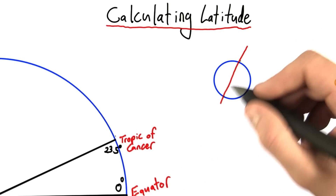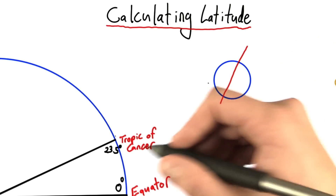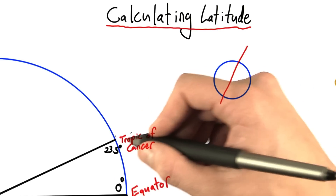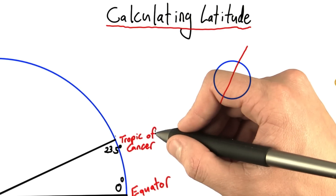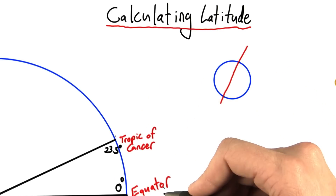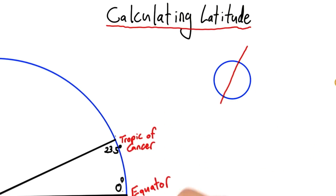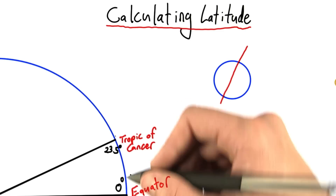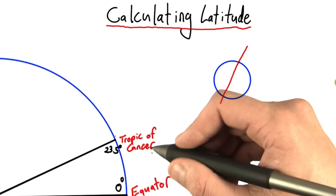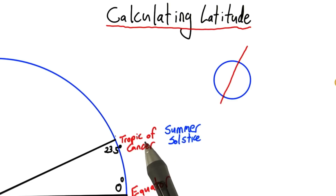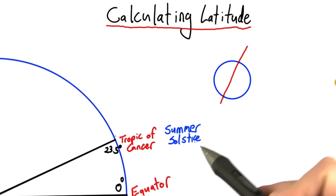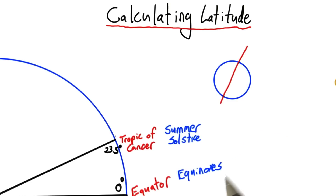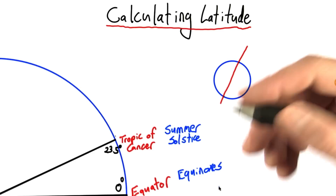In fact, due to the tilt of the earth, the sun can be directly overhead anywhere between the Tropic of Cancer, the equator, and another imaginary line 23.5 degrees south of the equator, known as the Tropic of Capricorn. The sun is directly over the Tropic of Cancer on the summer solstice, directly over the equator on what's known as the equinoxes, and directly over the other Tropic on the winter solstice.